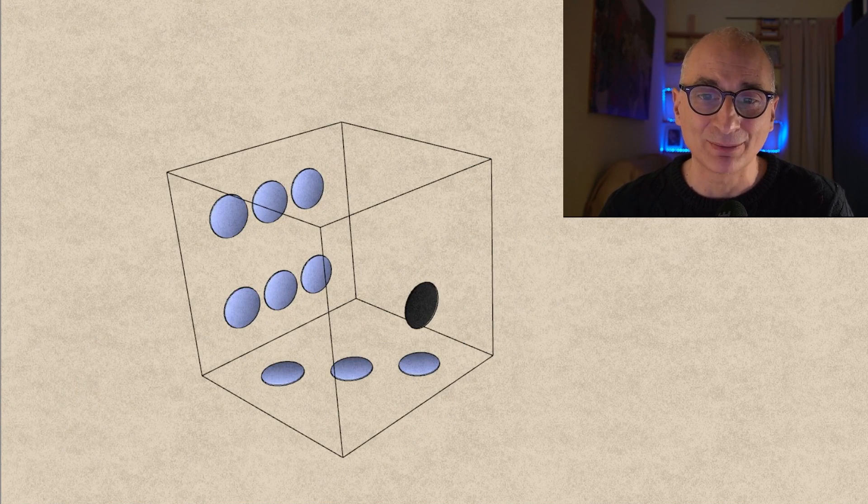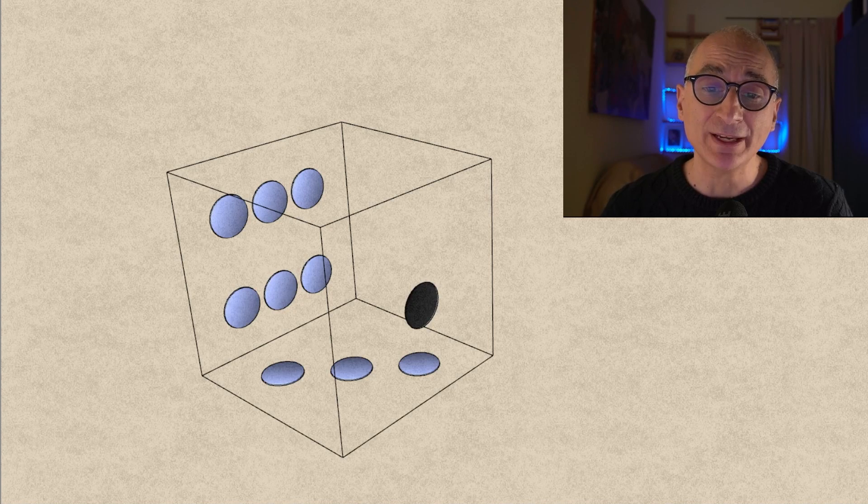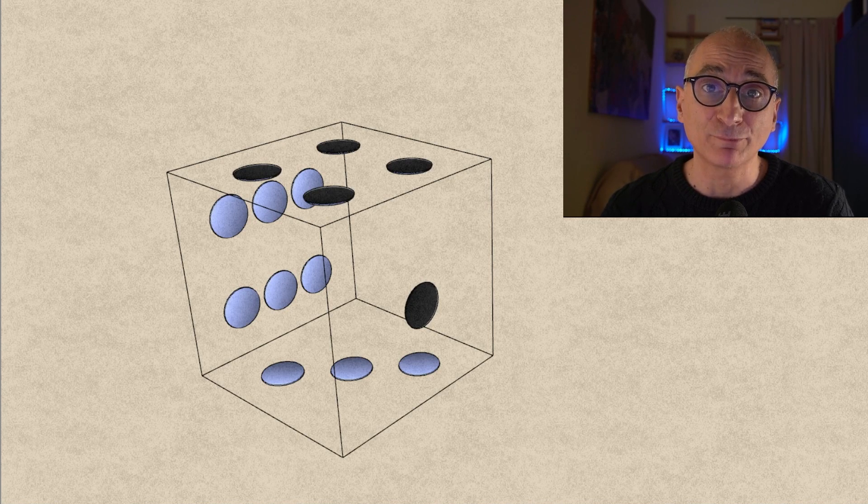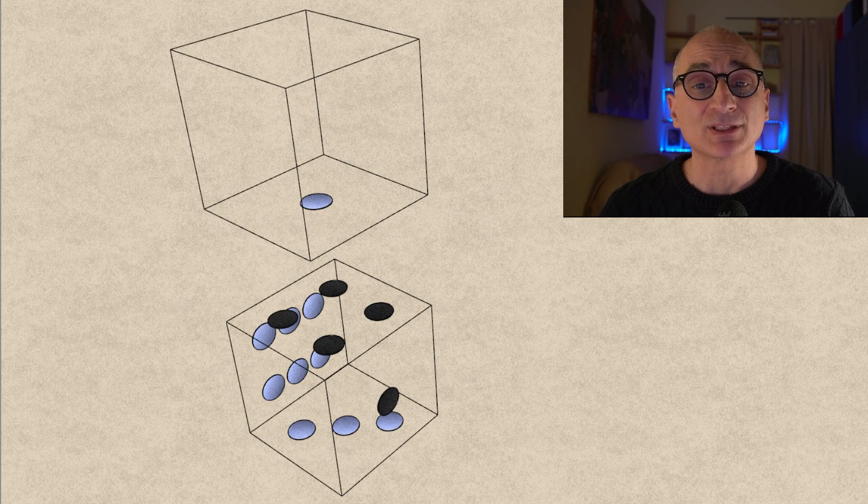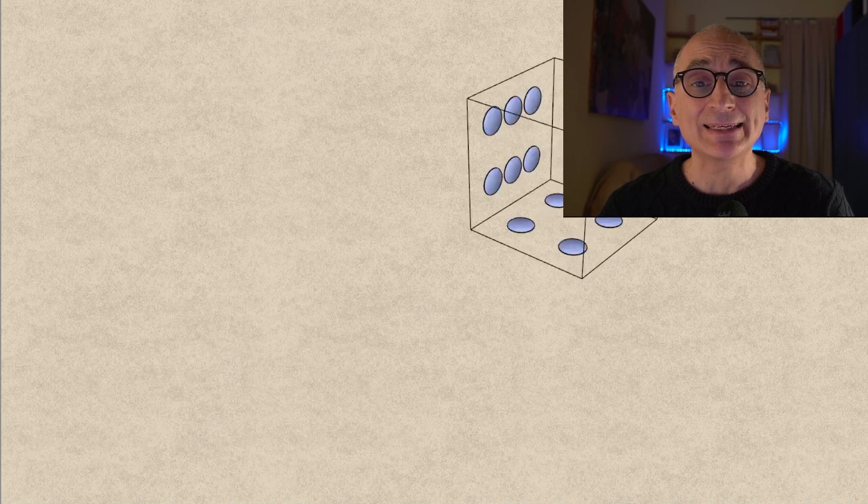So now let's assume that the bottom face has a three. So on the opposite face we have a four and on the next dice we have a one and on the opposite face we have a six and we're stuck again.